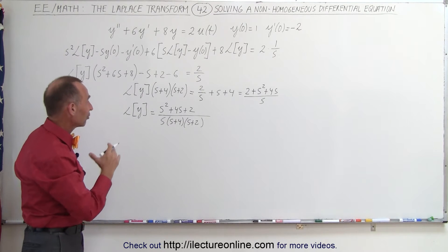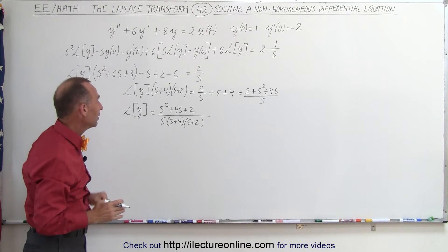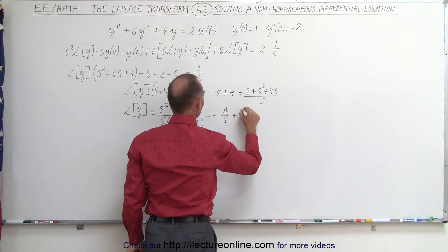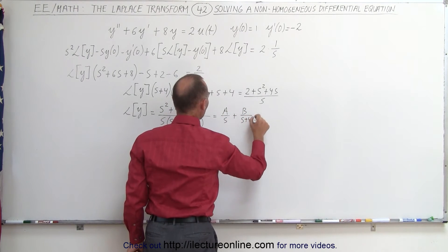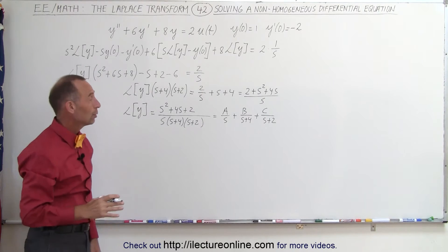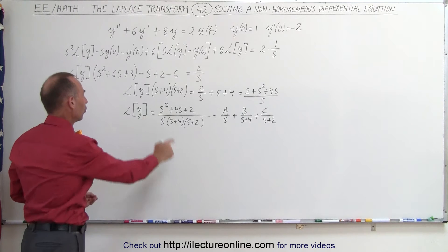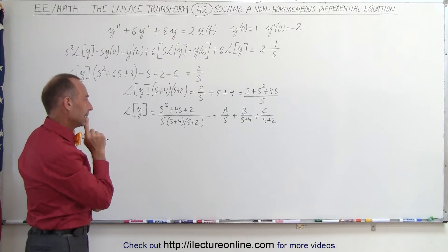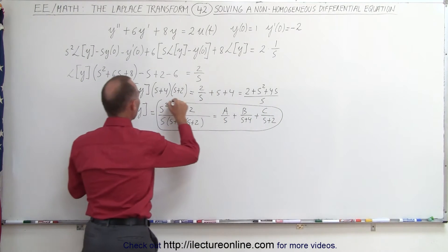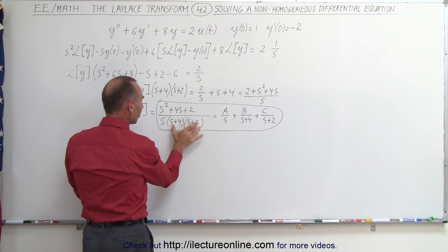We're going to use the method of partial fractions to write this as the sum of three fractions, since we have three terms multiplied in the denominator. This can be written as A over s, plus B over s plus four, plus C over s plus two. All we need to do is find A, B, and C so we can take the inverse Laplace transform to solve for y. We'll multiply both sides by s times s plus four times s plus two to clear the denominators.